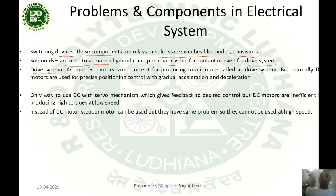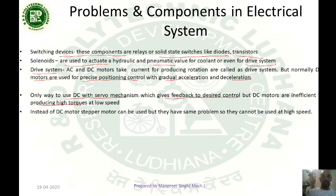Regarding the drive system, some type of motors are used to drive the machine. Normally DC motors are used, because CNC needs precise positioning control with gradual acceleration and deceleration. DC motors with a servo mechanism give feedback for desired control, but DC motors are insufficient for producing high torques at low speeds.